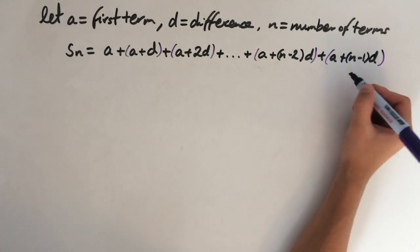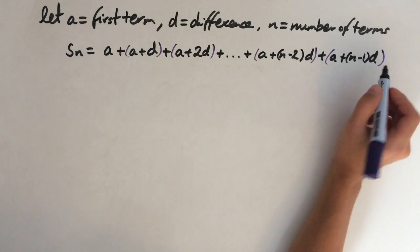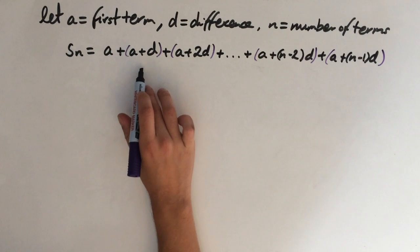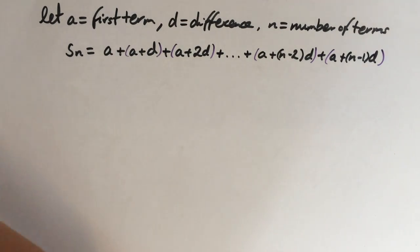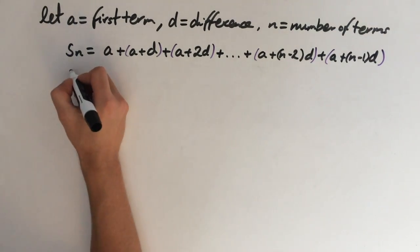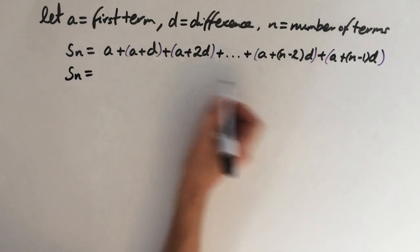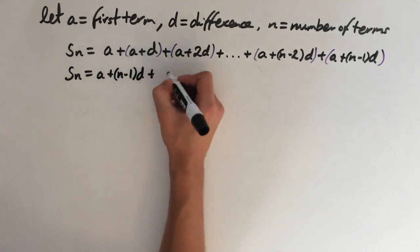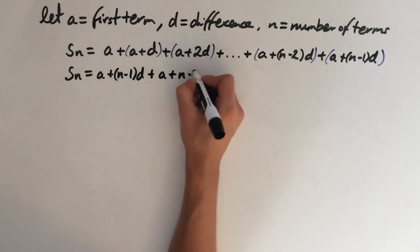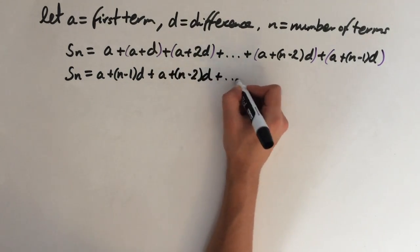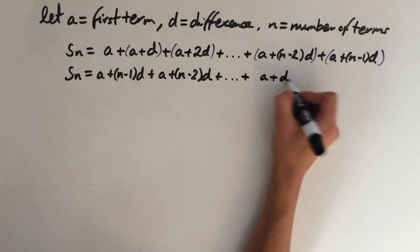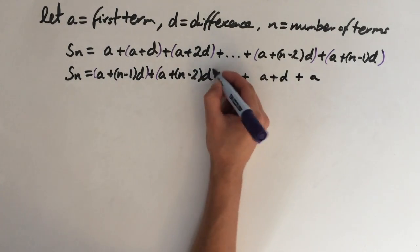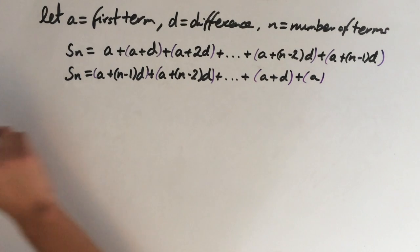The last term is a plus (n minus 1)d. The reason we have n minus 1 is because we introduced d in the second term, so there is always one less d than the term number. We use the same trick as before and write the series out backwards: S(n) equals a plus (n minus 1)d, plus a plus (n minus 2)d, and so on, down to a plus d and a.